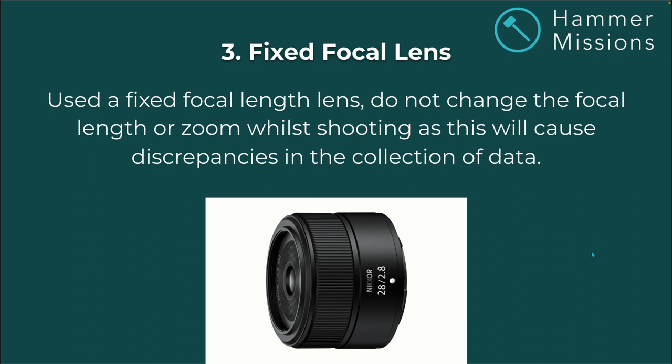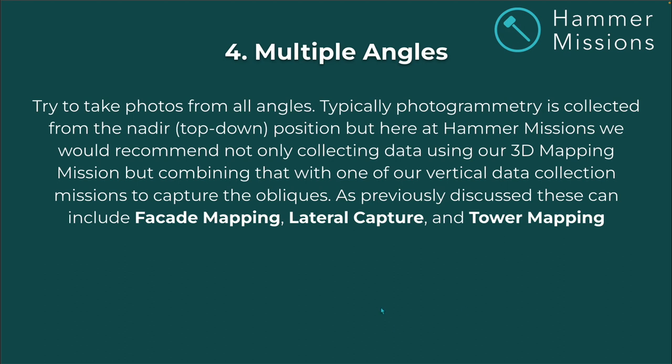Fixed focal lens: use a fixed focal lens and don't change the focal length or zoom while shooting, as this will cause discrepancies in the collection of data — keep it fixed at all times. Multiple angles: try to take photos from all angles. Typically photogrammetry is collected from the nadir top-down position, but we'd recommend combining 3D mapping with one of our vertical data collection missions to capture obliques.